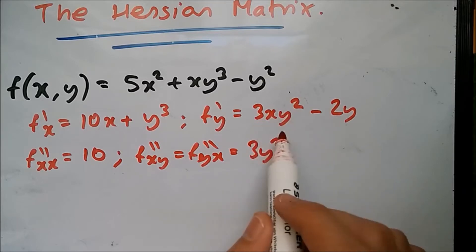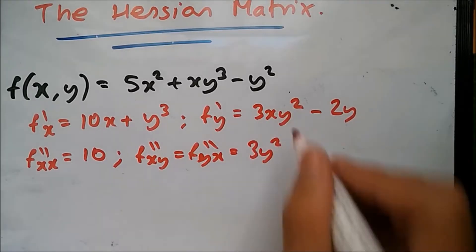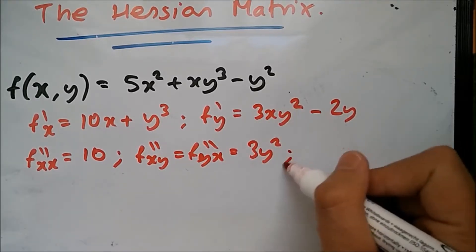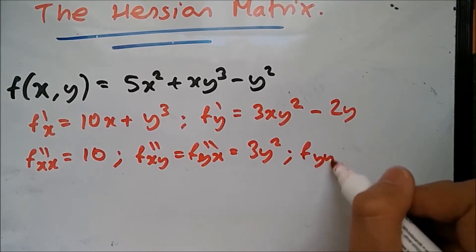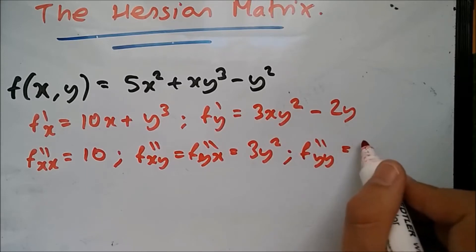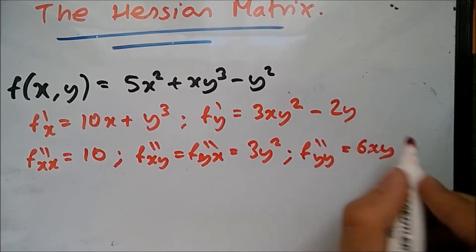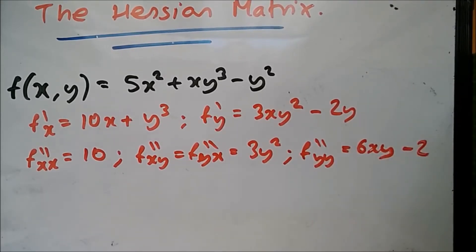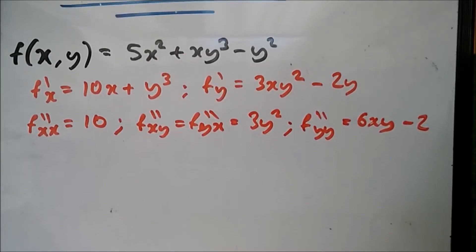Likewise, differentiating with respect to Y, you're gonna get 6y - 2. Now differentiating with respect to X, you're just gonna get 3y² as well. And lastly, we're gonna differentiate with respect to Y. What is this gonna give you? Drop the 2 down, you're gonna get 6xy - 2.